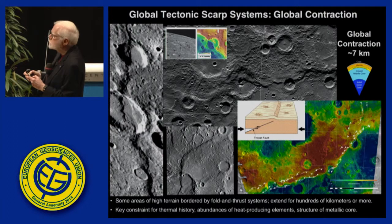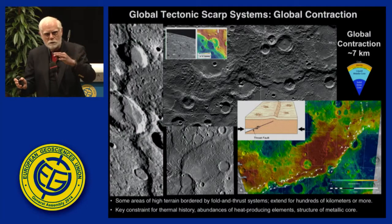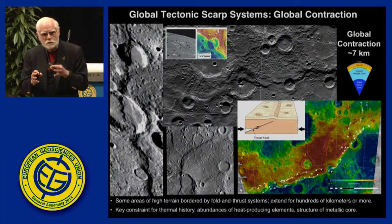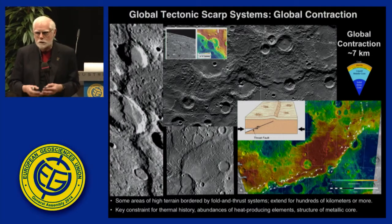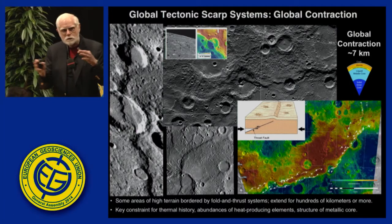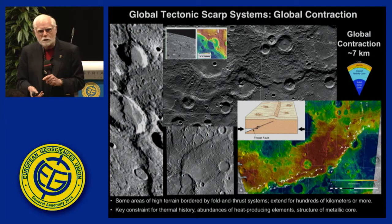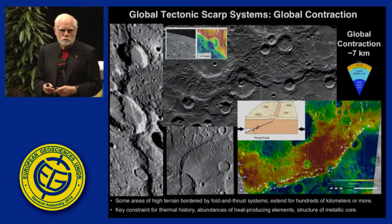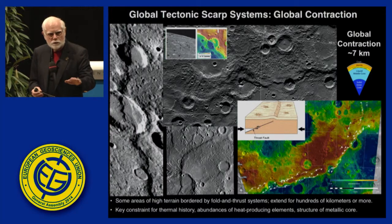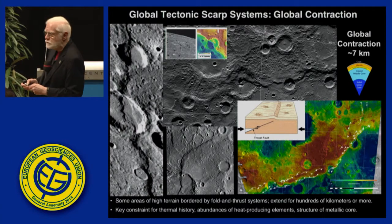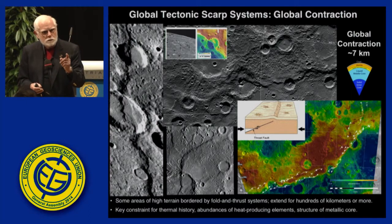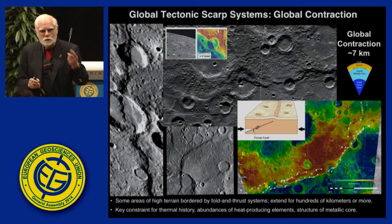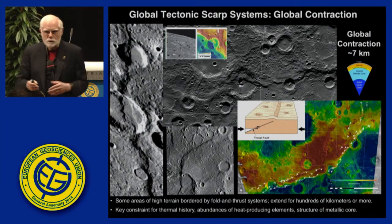We also see global tectonic scarp systems. When Mariner 10 went by, we saw scarps a kilometer high. The global coverage of Messenger allowed us to map them all and measure them — it turns out it's about a seven-kilometer radius difference, indicating global contraction. Before plate tectonics, people thought shrinkage of the Earth might have caused underthrusting and mountain belts. Plate tectonics took care of that theory, but maybe it's alive on Mercury — and maybe this is how plate tectonics starts.